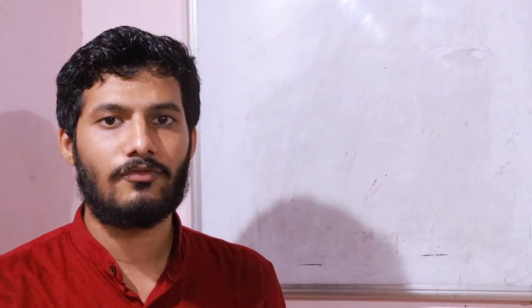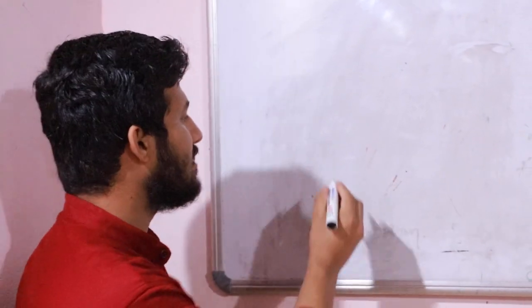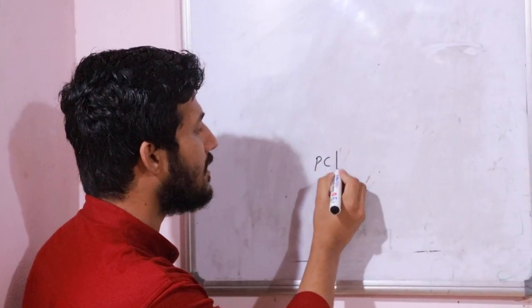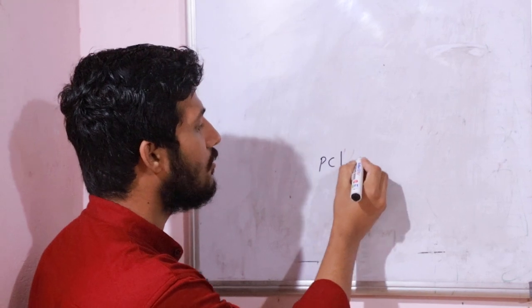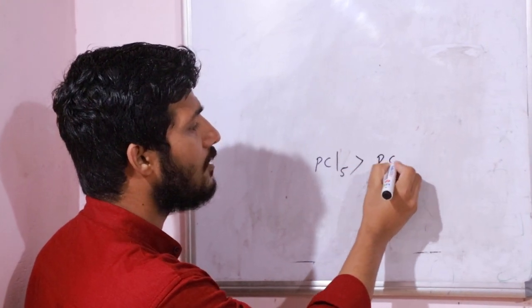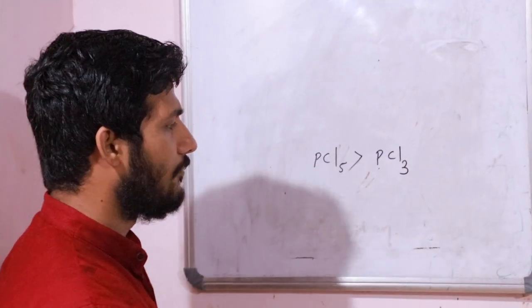Today we are discussing why the PCl5 molecule is more reactive than the PCl3 molecule. What is the reason behind this? The phosphorous pentachloride molecule is more reactive when compared with the phosphorous trichloride molecule.